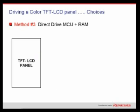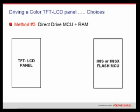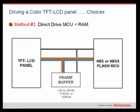The third way is to use a flash MCU with an external RAM frame buffer. In this case, it's either an H8S 16-bit MCU or an H8SX 32-bit MCU from Renesas. These MCUs have an external DMA feature that allows the MCU to drive the TFT panel directly with minimal loading on the CPU itself. The frame buffer can be SRAM, PSRAM, or SDRAM, giving you options to reach the lowest system cost based on the level of graphic animation and the screen resolution you've chosen.